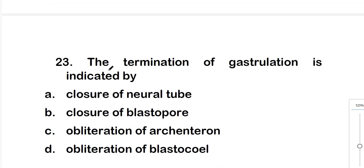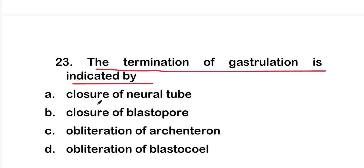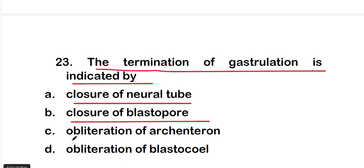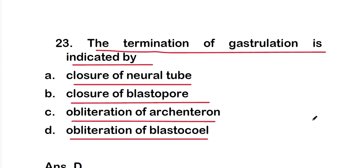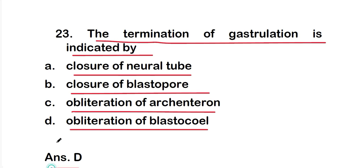Question 23: the termination of gastrulation is indicated by option A: closure of neural tube; option B: closure of blastopore; option C: obliteration of archenteron; or option D: obliteration of blastocoel. The right answer is option D — obliteration of blastocoel indicates the termination of gastrulation.